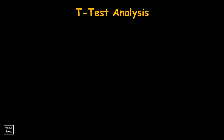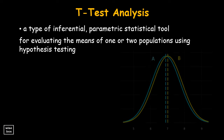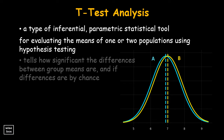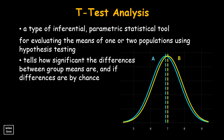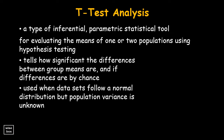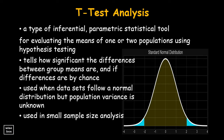T-test analysis is a type of inferential, parametric statistical tool for evaluating the means of one or two populations using hypothesis testing. It tells how significant the differences between group means are, and if differences are by chance. The t-test is used when data sets follow a normal distribution, but population variance is unknown, and it is usually used in small sample size analysis.